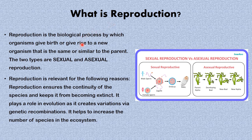Reproduction is a biological process by which organisms give birth or give rise to a new organism that is the same or similar to the parents. The two modes or types of reproduction are sexual and asexual reproduction. We can see here a diagram that shows the two modes of reproduction.